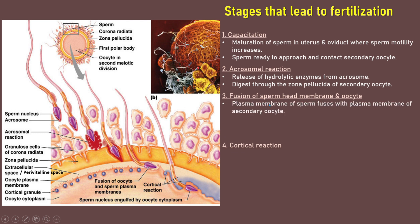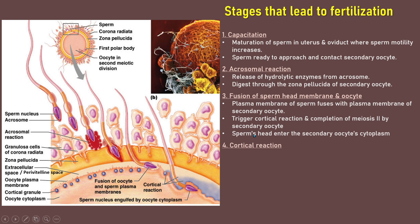In the third stage, the plasma membrane of the sperm fuses with the plasma membrane of the secondary oocyte, triggering cortical reaction and completion of meiosis II by the secondary oocyte. The sperm's head enters the secondary oocyte's cytoplasm.